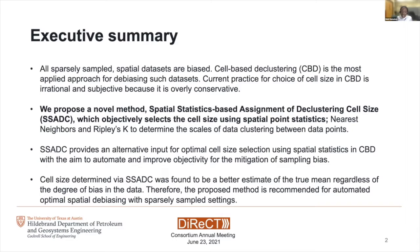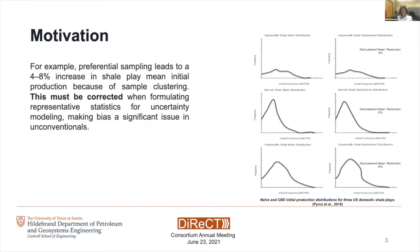The motivation for this work stems from the impact of spatial bias in data sets. Based on the work of Petri Tal in 2016, which showed the use of naive statistics from preferentially sampled data leads to an erroneous 48% error in mean initial production, opposed to using the declustered statistics. It is therefore imperative to correct the raw statistics when formulating representative statistics for uncertainty modeling, making bias a significant issue in unconventionals.